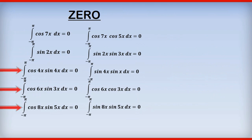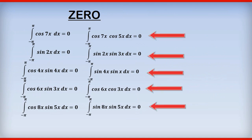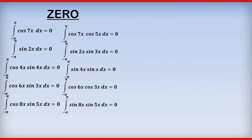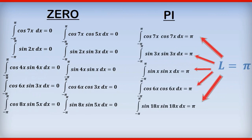Wherever we have cos times sine, zero. Wherever we have cos times cos or sine times sine, we'll get zero. With the single exception that when the two terms are identical, as you can see on the right-hand side here, then we get π.